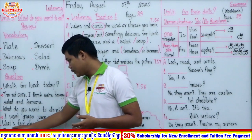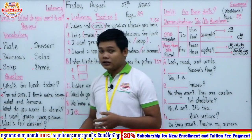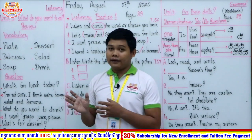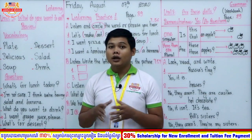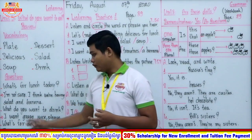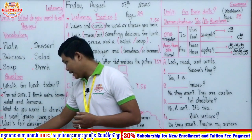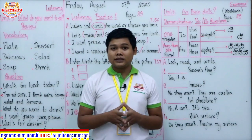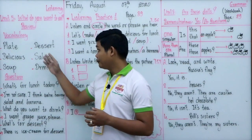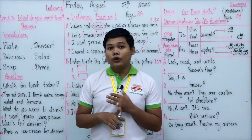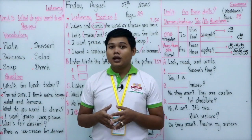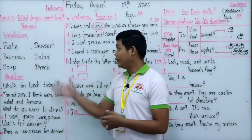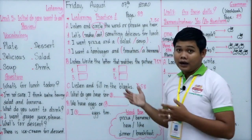The last question is: 'What's for dessert?' After lunch we need a dessert — in European culture they have dessert after every meal. The answer is: 'There is ice cream for dessert.' As mentioned earlier, dessert can be fruit, ice cream, or other sweets. Now we have finished the review section.